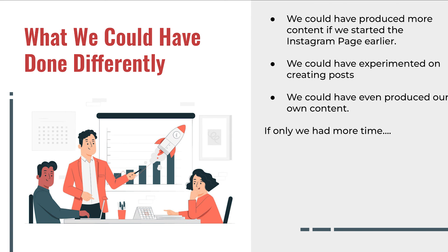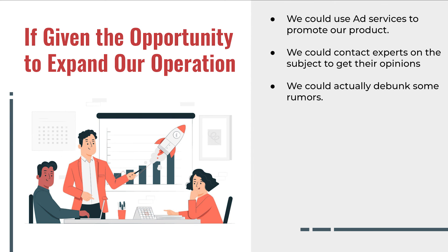Here are some things we could have done differently. We could have produced more content and possibly gained a larger following if we had started the Instagram page earlier. We could have experimented with features unique to Instagram, such as stories, QR codes, and Instagram Reels. We could have even produced our own content instead of only referring to other sources. If given the opportunity to expand, we could use Instagram business ad services or third-party ad services, contact experts on information transmission, and actually debunk some rumors or show their origins.